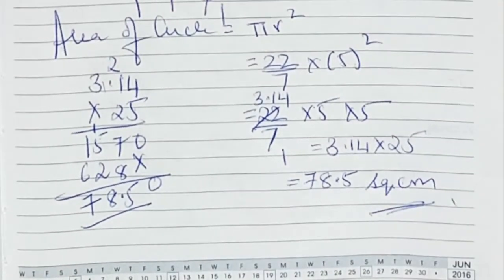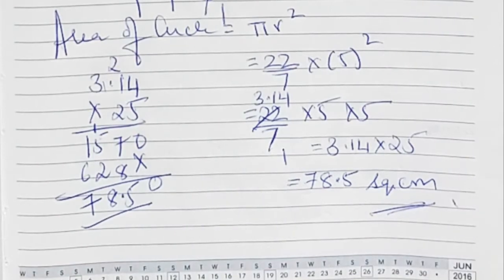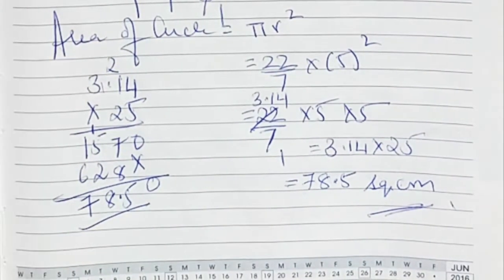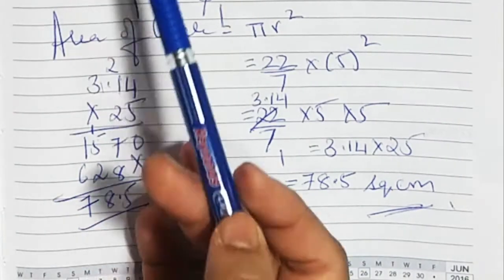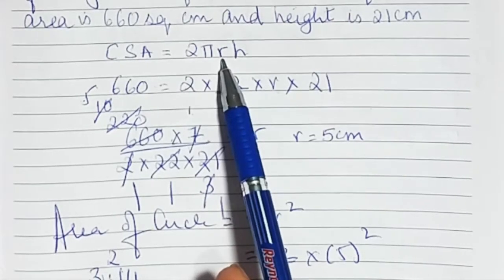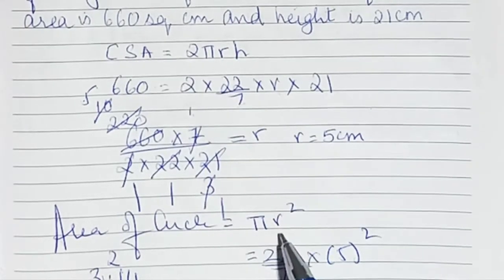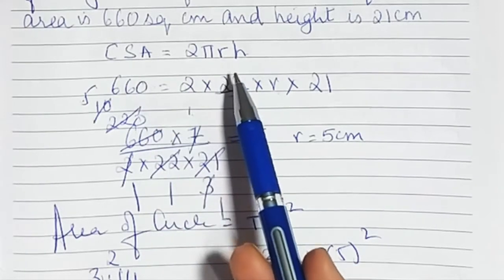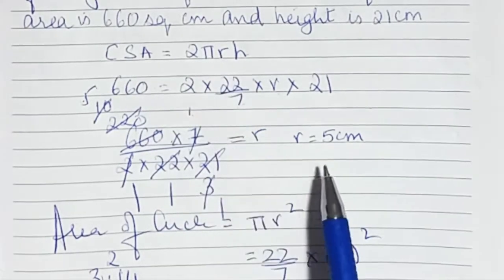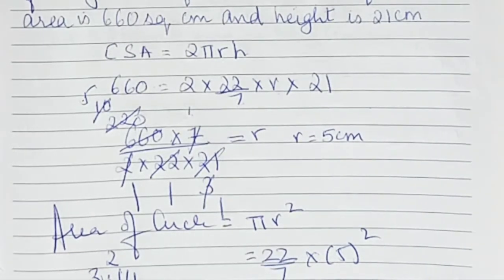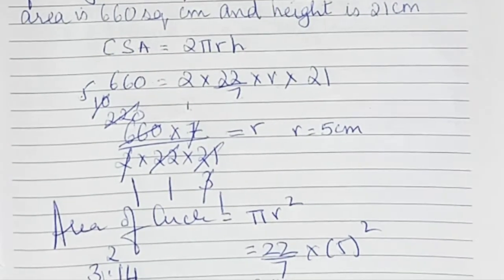So the area of the circle is 78.5 square centimetres. What we had to do: we were given the curved surface area and told to find the area. We did not have the radius, so we used the curved surface area formula to find the radius first, and after finding the radius we found the area. Now let's do the fourth sum.